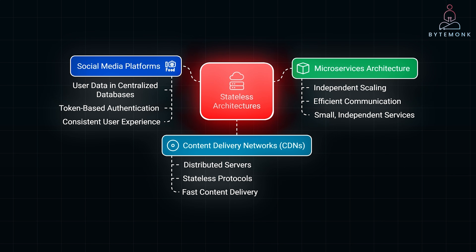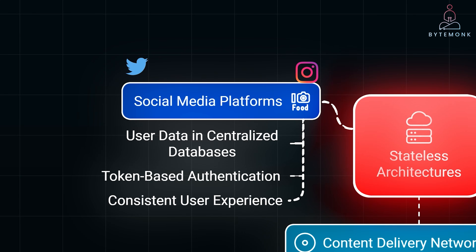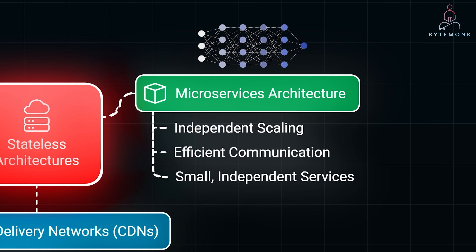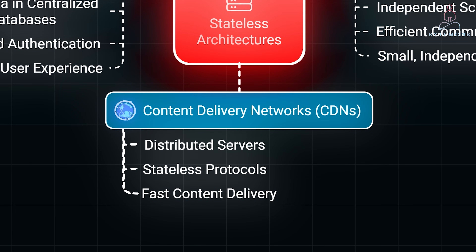Stateless architecture is heavily used in many modern real-world applications. Services like Twitter and Instagram use stateless architecture to handle millions of users simultaneously. By storing user data in centralized databases and using tokens for authentication, they ensure that users have a consistent experience no matter which server processes their request. Modern applications often use microservices, where functionalities are broken down into small, independent services. Statelessness is crucial here because it allows each microservice to scale independently and communicate effectively without relying on shared state. Content delivery networks or CDNs deliver content from servers distributed around the globe, using stateless protocols to deliver content quickly and reliably regardless of the user's location or which server responds to the request.